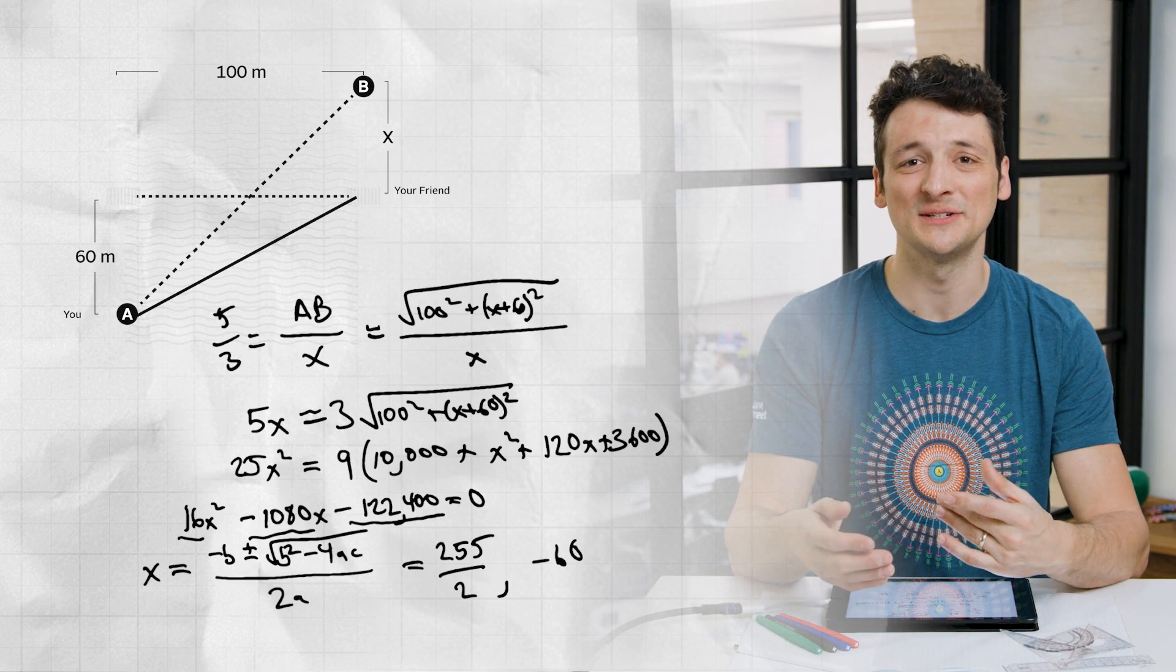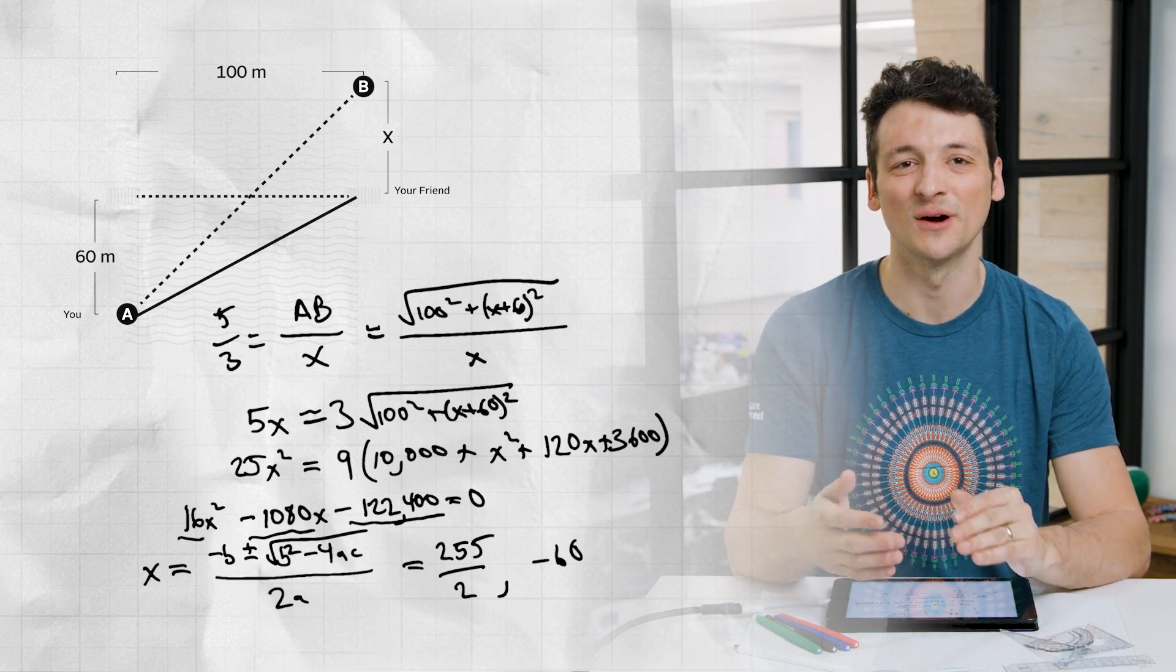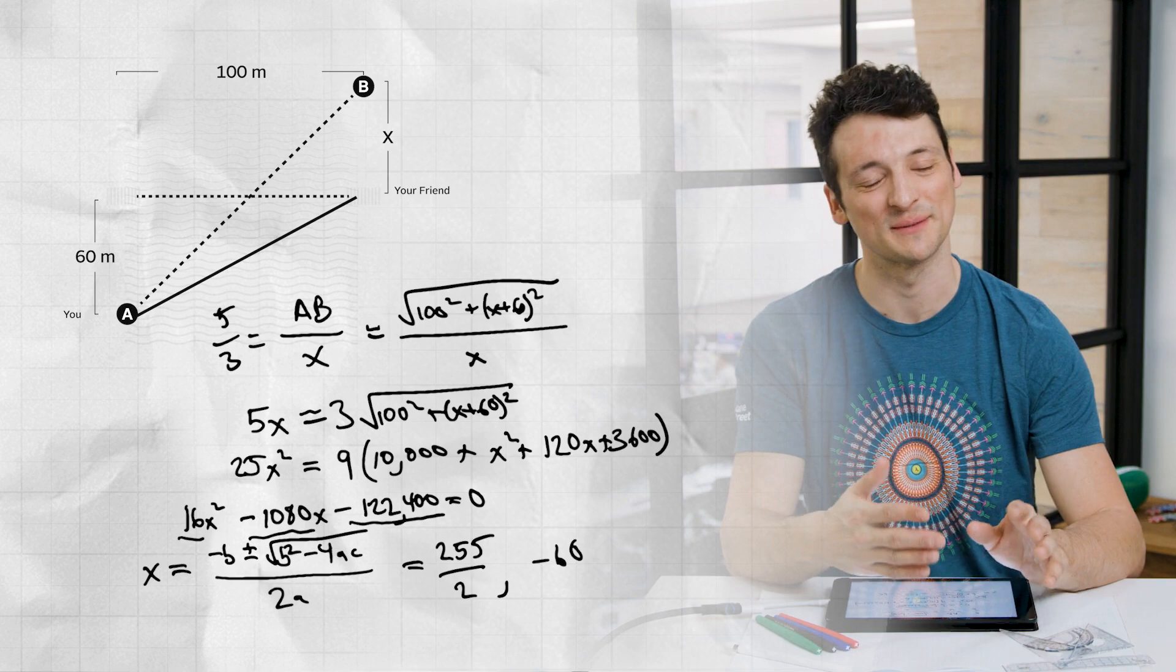So our final solution is you should point wavy 255 over 2 or 127.5 meters upstream of your friend.